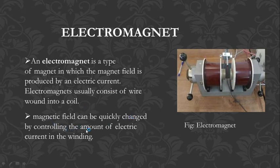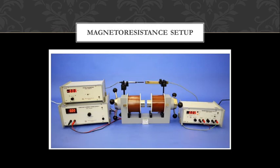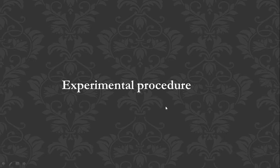Magnetic fields can be quickly changed by controlling the amount of electric current in the winding — if you increase the current, the magnetic field also increases. The digital Gauss meter is a device that measures magnetic field direction and strength. It operates on the principle of the Hall effect in semiconductors using a Hall probe sensor. This is the overall picture of the magnetoresistance setup.